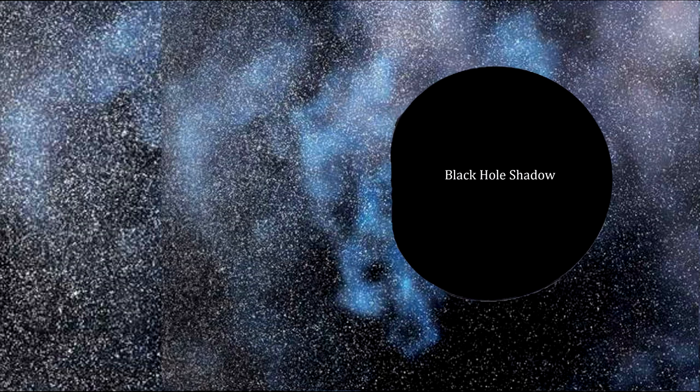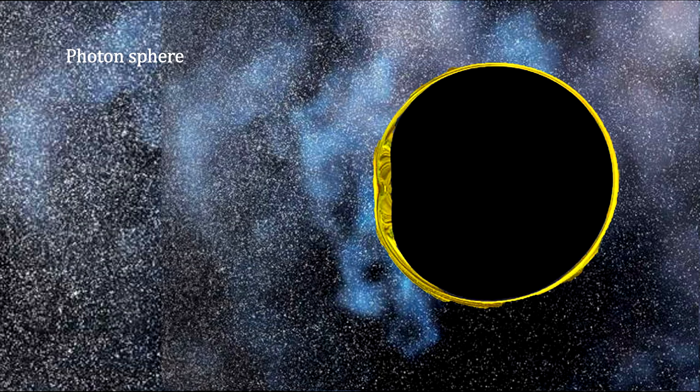We start with the black hole's shadow. The Kerr metric shows that light can be captured in stable orbits outside the event horizon.